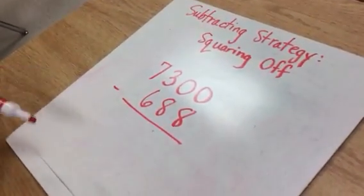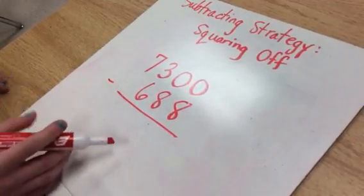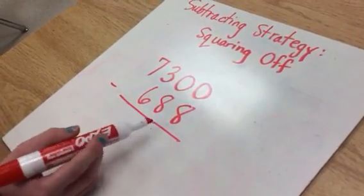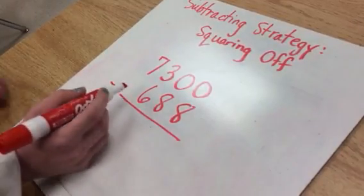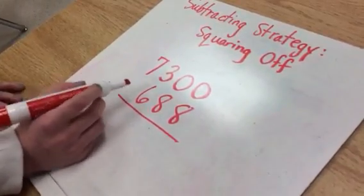And since it's 0 take away 8, you can't take 8 away from 0, so then you're going to go next door to the 10s. But the 10s has nothing, so now you're going to look at its neighbor, and it has 3.